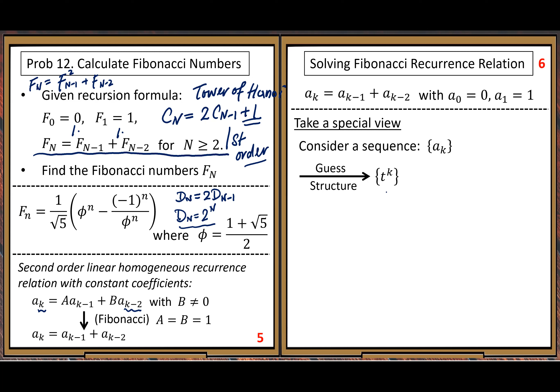Can we have a similar structure for the second-order case? Based on the first-order solution, we make the brave assumption that our second-order solution probably has a similar structure. The base T we do not know - we need to find it. The exponent is still k, consecutive natural numbers, because we want to use a sequence to represent our solution. We use the exponential function - also called a geometric sequence: T to the k.